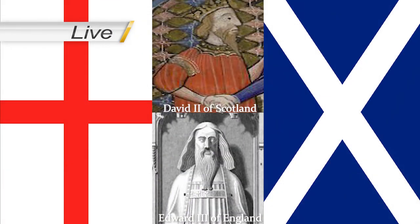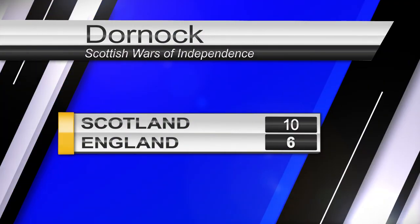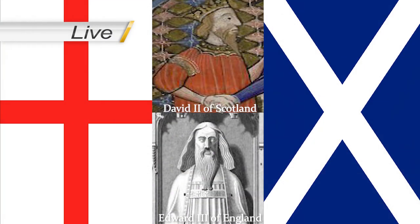A small battle has taken place in Dumfriesshire at Dornock where 800 English troops engaged with just over 50 Scots. The English won, killing 24 Scots while only having 2 of their own killed. England 6, Scotland 10.